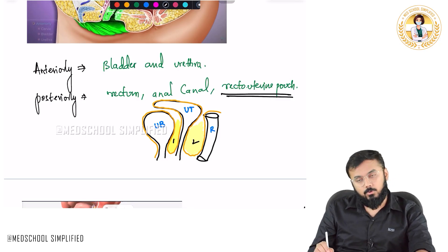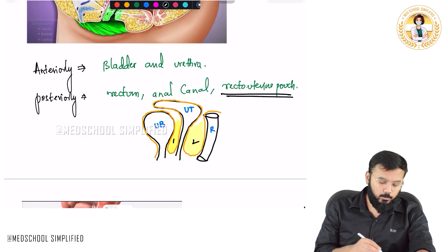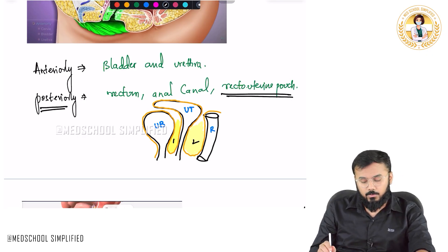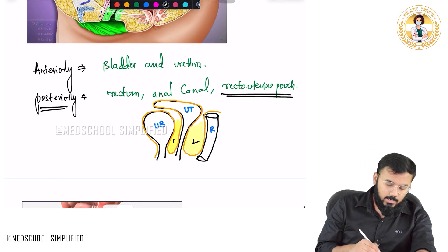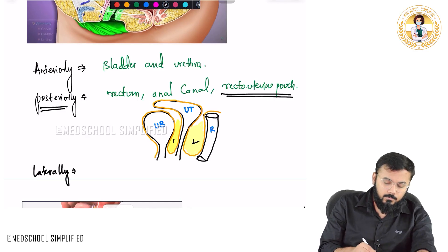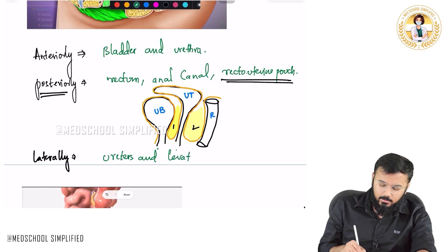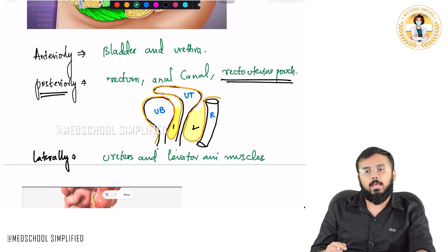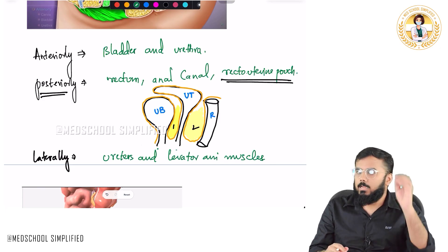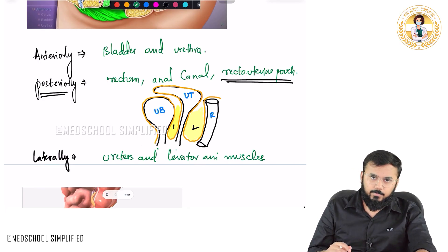So in the center you have got the vagina; behind the vagina there is the recto-uterine pouch. Posteriorly you have the recto-uterine pouch, rectum, and anal canal. Next, laterally what do you have? Laterally you have got ureters and the levator ani muscle — these are the structures located laterally.